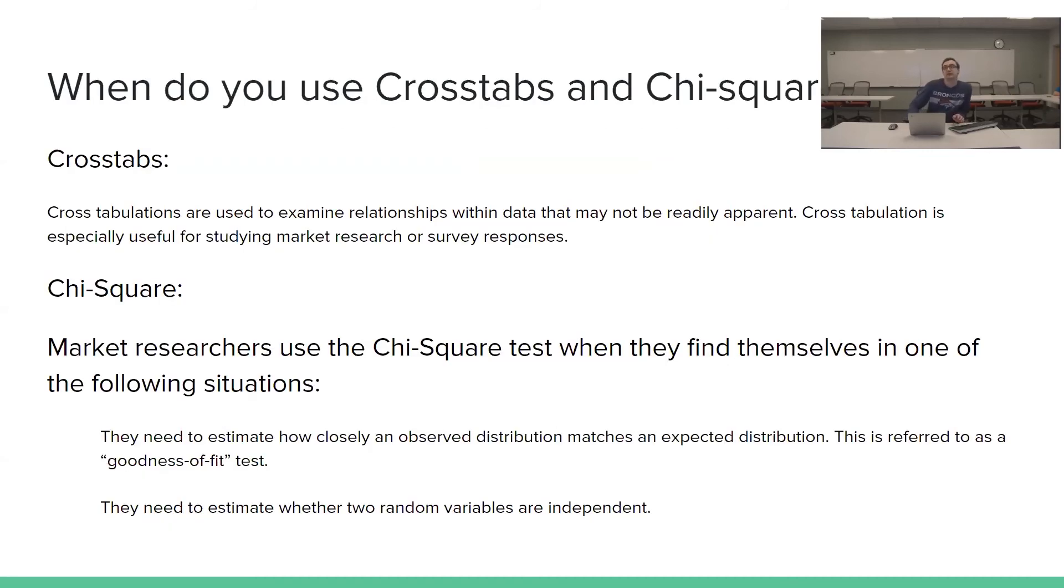So now I'm going to be discussing cross tabs and chi-square. Cross tabs are generally used to examine relationships within data that may not be readily apparent. Cross tabulation is especially useful for studying market research or survey responses. And we'll have a good example of that coming up soon.